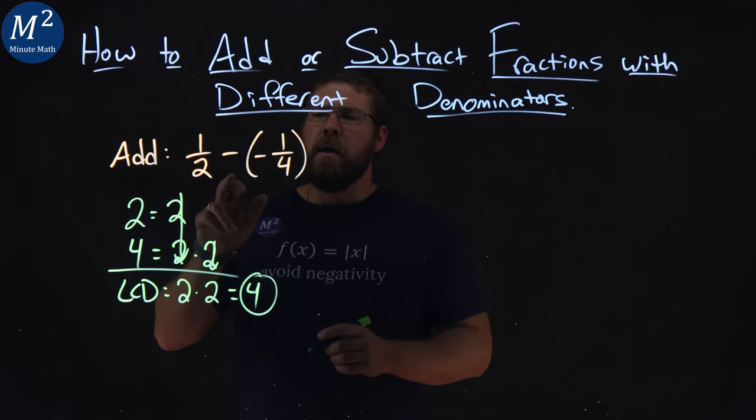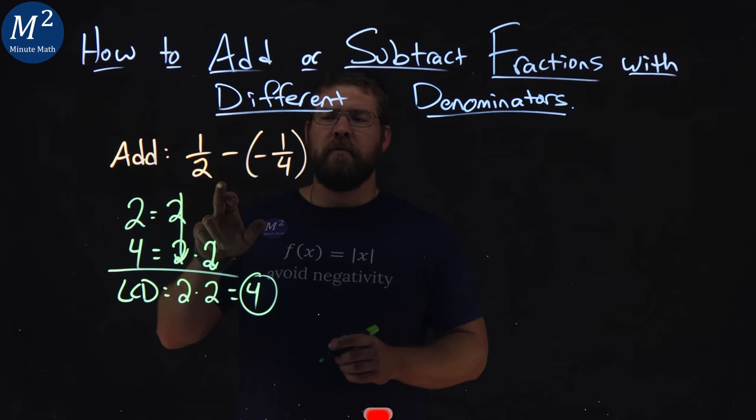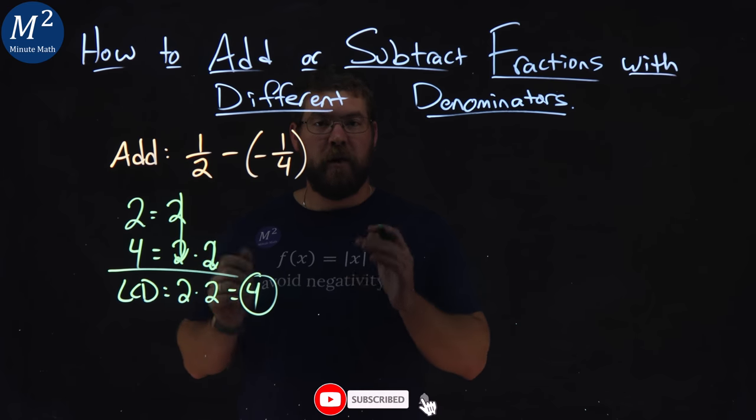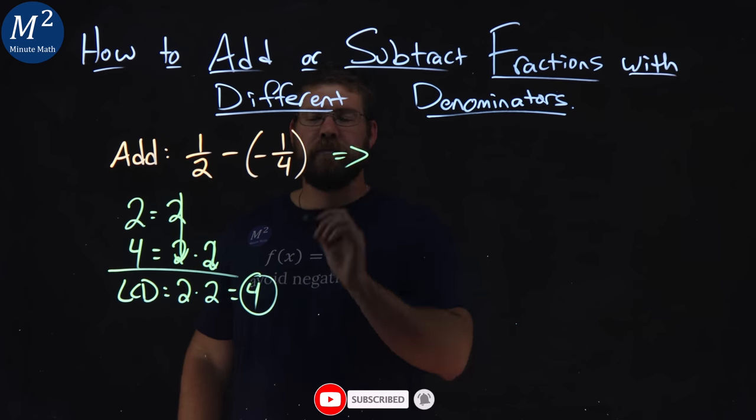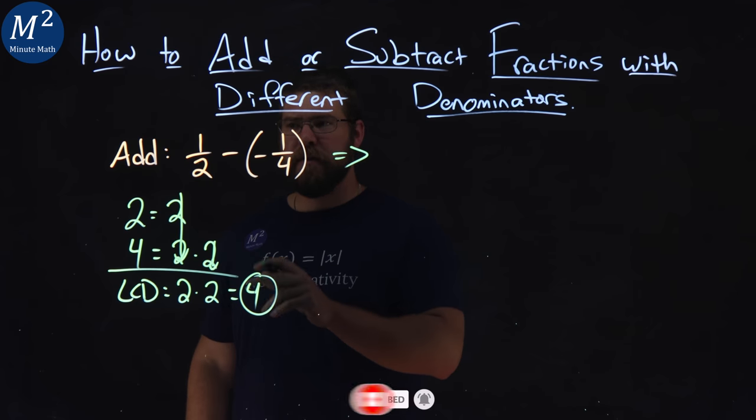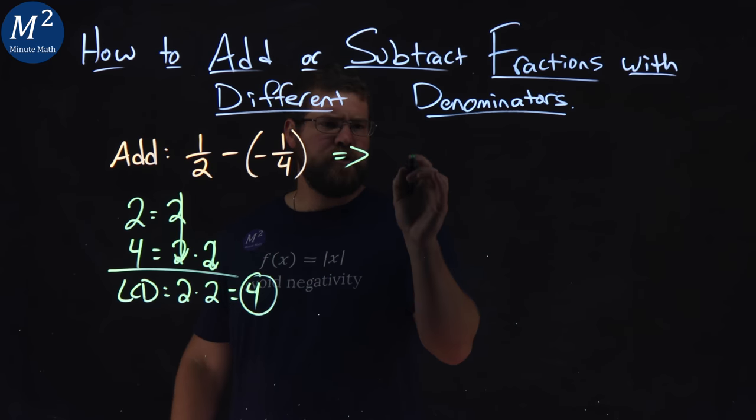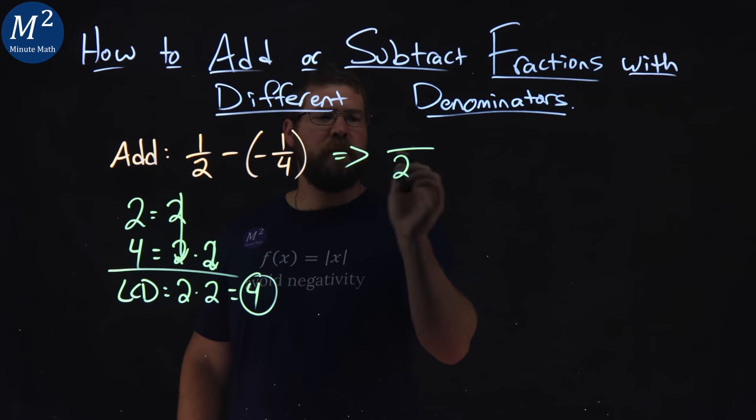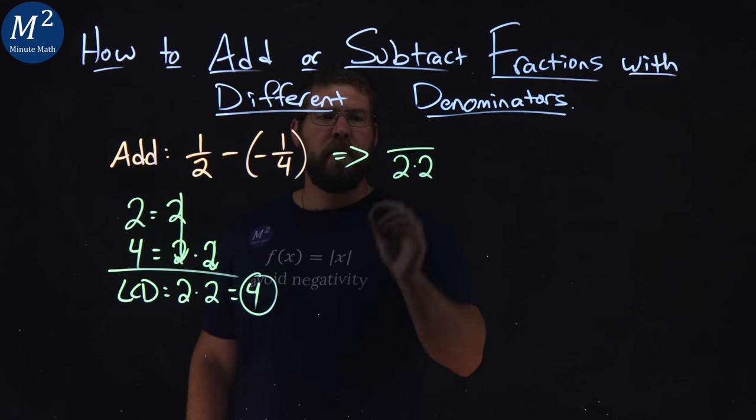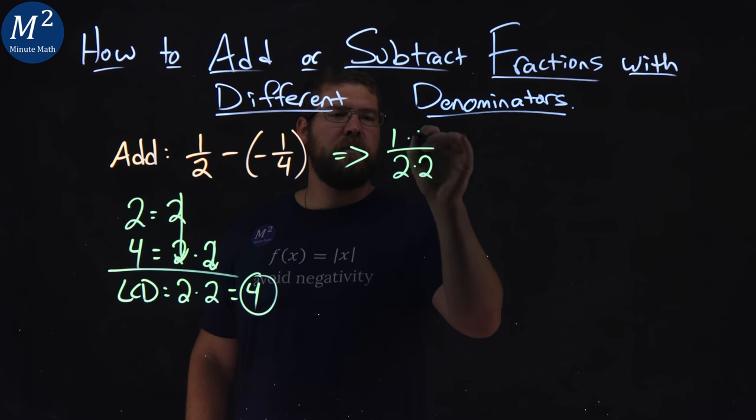Now let's convert each one of these fractions to have a denominator of four. Well, one-half, to get four, is two times two. So we take the original two and multiply it by the new two. The numerator, one times two now.